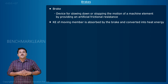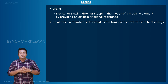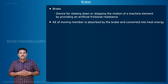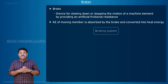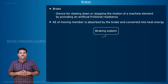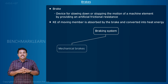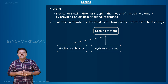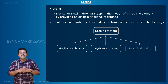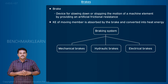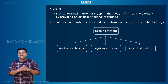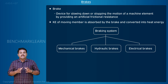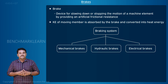According to the form of energy used for actuating the braking element, braking systems are classified into three types: mechanical brakes, hydraulic brakes, and electrical brakes. In this video we learn about mechanical and hydraulic brakes only.